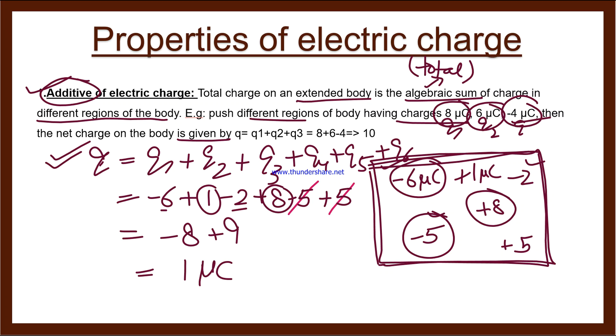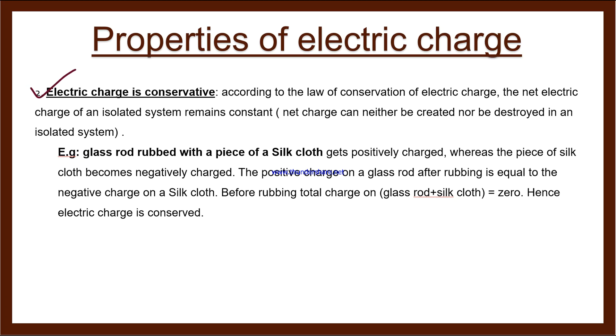The second property is that electric charge is conservative. The conservative word itself tells us that neither is something being created nor is something being destroyed. According to the law of conservation of electric charge, the net electric charge of an isolated system remains constant. Constant means neither increasing nor decreasing. Net charge can neither be created nor be destroyed in an isolated system.